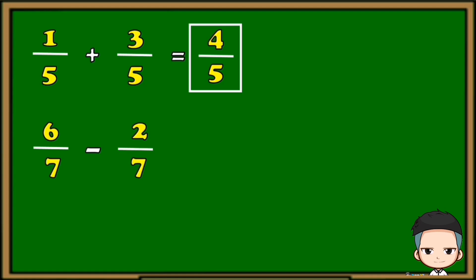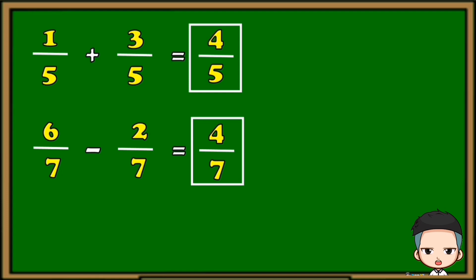Let's try another example: 6 over 7 minus 2 over 7. Again, the denominators are the same, so we're going to copy the denominator. And since the operation is subtraction, we're going to subtract the numerators. 6 minus 2 is 4, so 4 over 7 is our final answer.